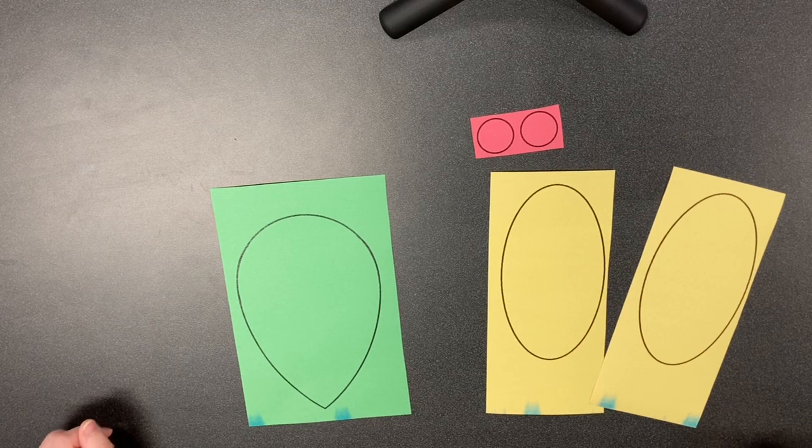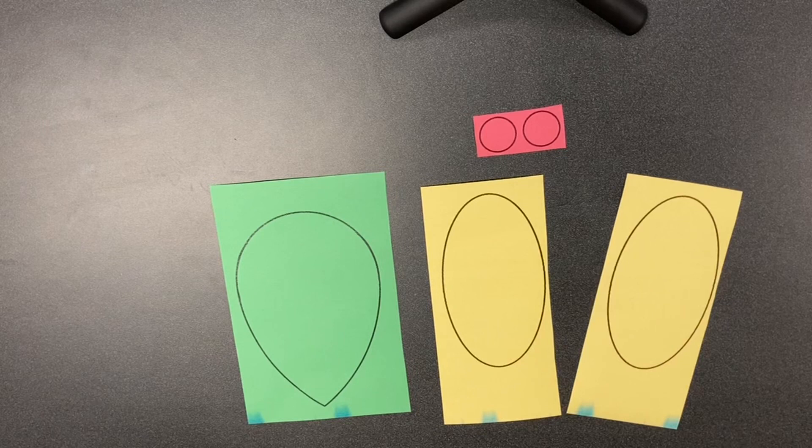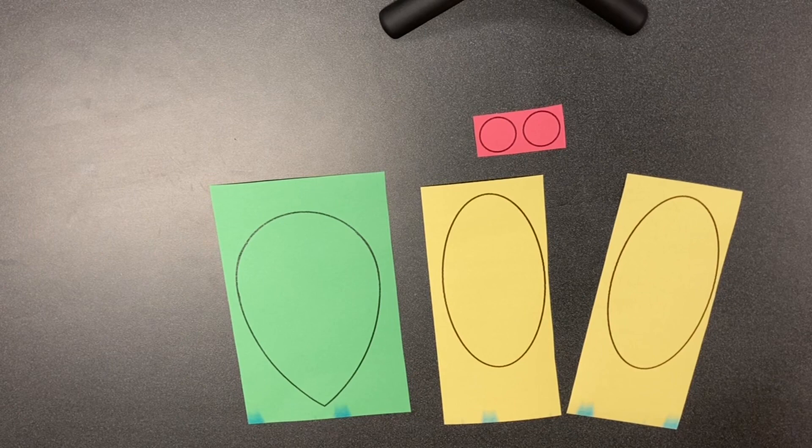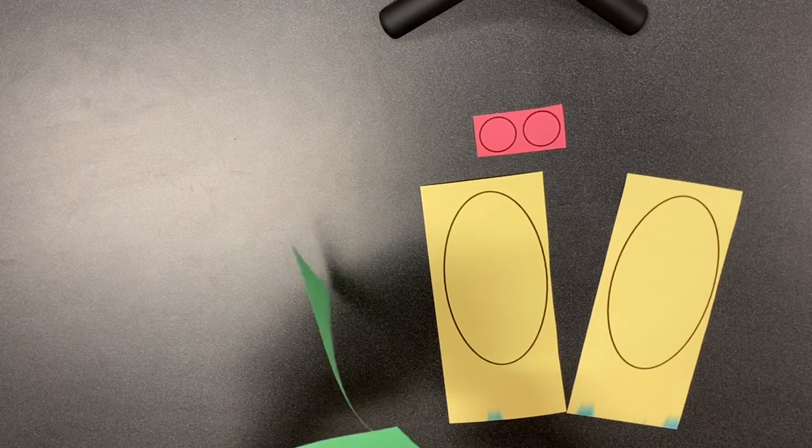It's very simple. In the package you'll get the cicada body, the wings, and the eyes. You just need some regular school glue, possibly a black marker for the eyes, and some scissors. So all you're gonna do is cut out your shapes.